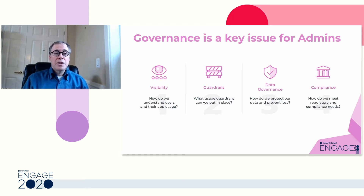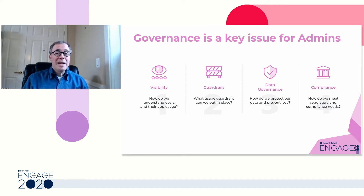We tend to think of it at Smartsheet in four ways. One is visibility — how do we give admins and IT visibility into users, usage, and what has been created in Smartsheet? The second is guardrails — setting the right boundaries at the organizational level so that the product may be used safely. Third is data governance — how do we protect our data and prevent loss? And the fourth is compliance — how do we comply with internal organizational policies as well as external regulatory agencies?